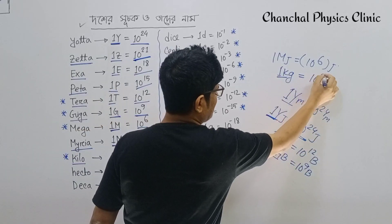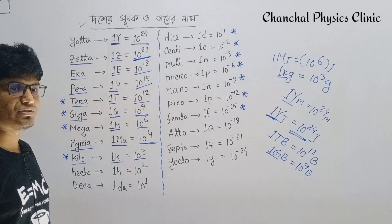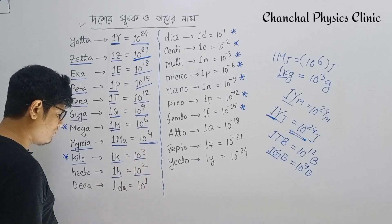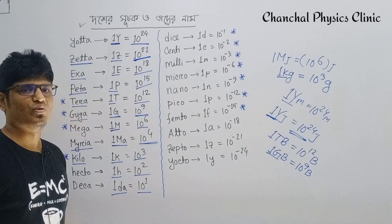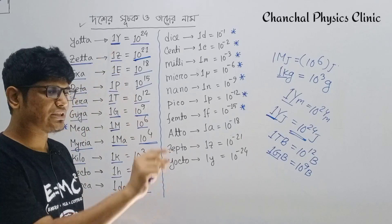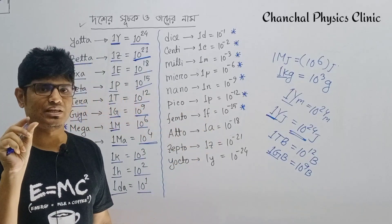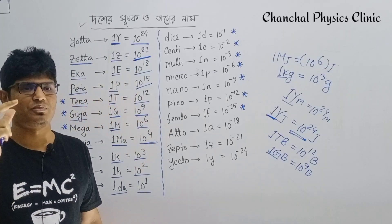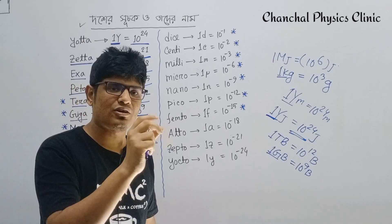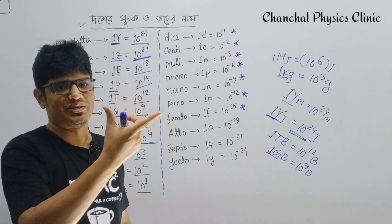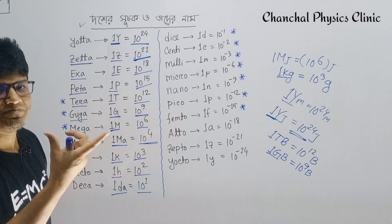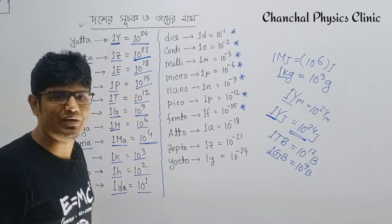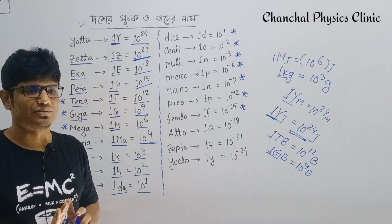1 kilogram is 10 to the power 3 grams. 1 Hecto is 10 to the power 2. 1 Deca is 10 to the power 1. So: Mega is 10^6, Giga is 10^9, Peta is 10^15, Tera is 10^12, Yotta is 10^24, Exa is 10^18, Zetta is 10^21. You will be able to do the same.